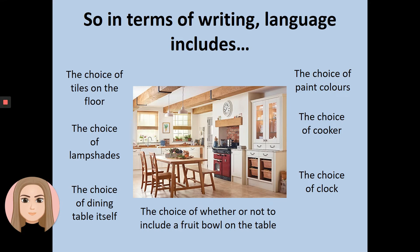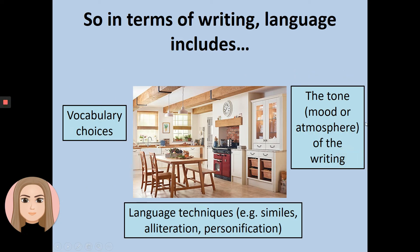We should have had a go at writing about language. Remember when we're talking about language in writing, we're talking about the interior bits of the writing, such as vocabulary choices and language techniques — similes, alliteration, personification — and all of those bits we looked at earlier. We also discussed the tone, mood, or atmosphere of the writing. We've said this poem has a joyous tone.